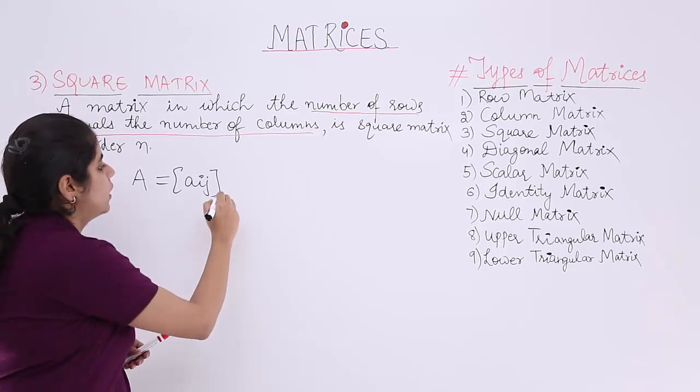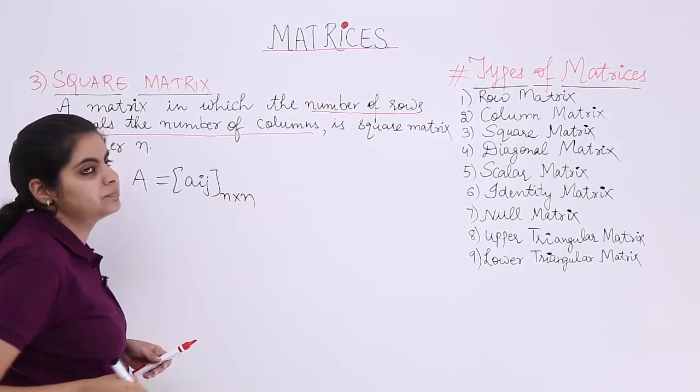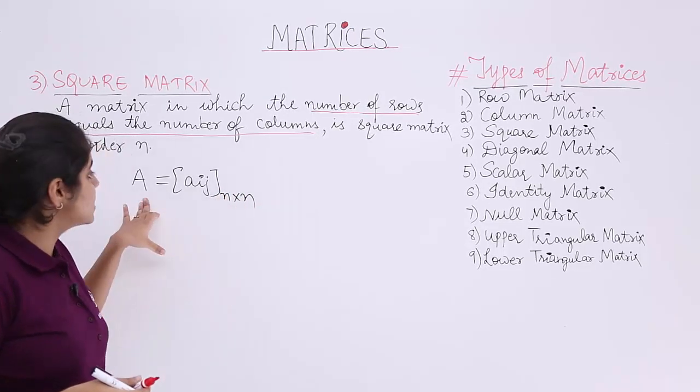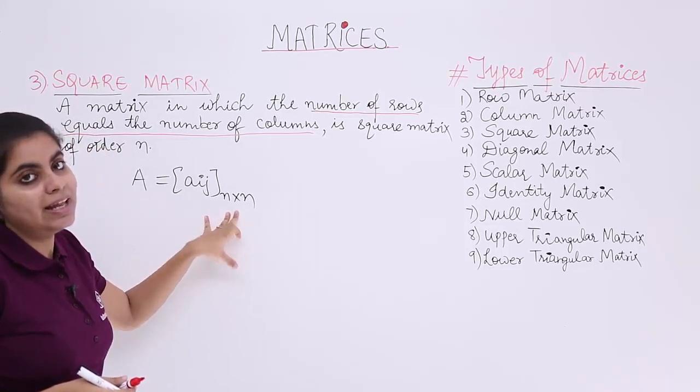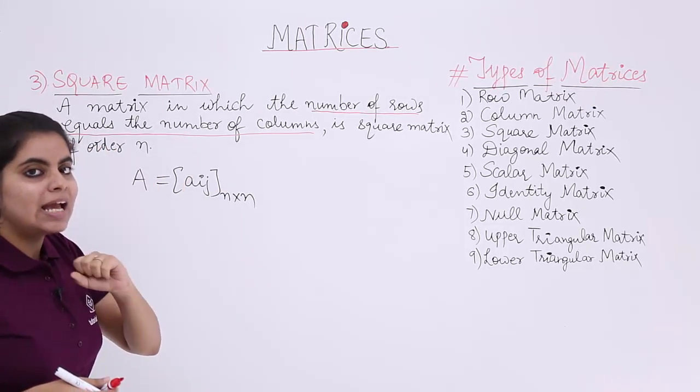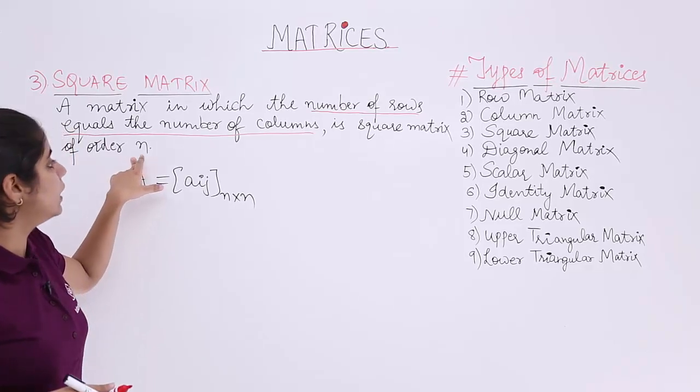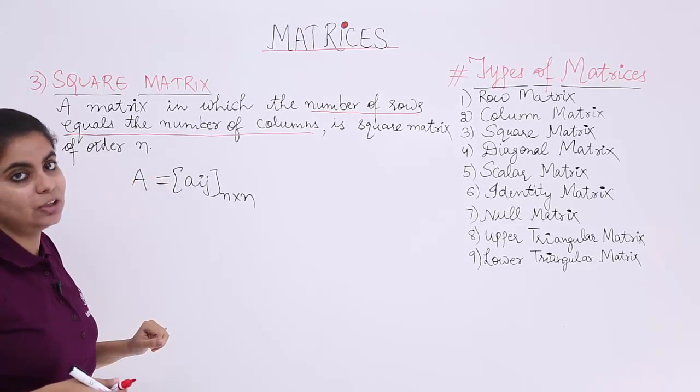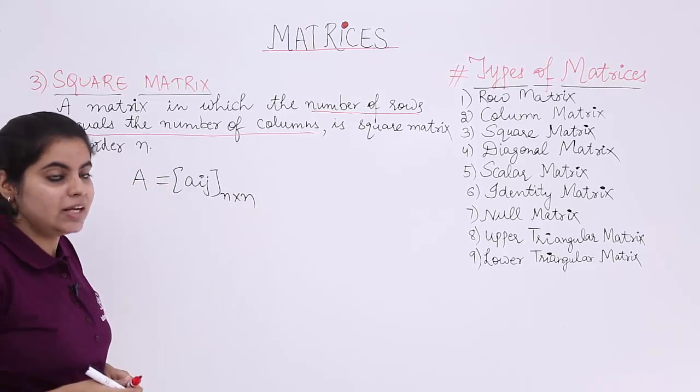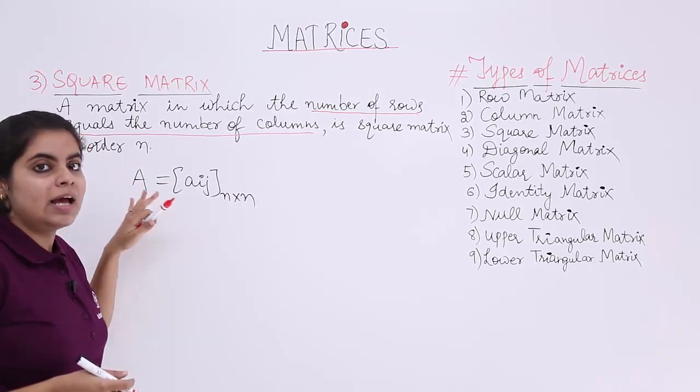So I have a square matrix of the order N by N. I say A is a square matrix of the order N by N, or I also say that A is a square matrix of the order N. Remember you don't need to write N by N again and again. You can just write N. This is the mathematical analysis part.